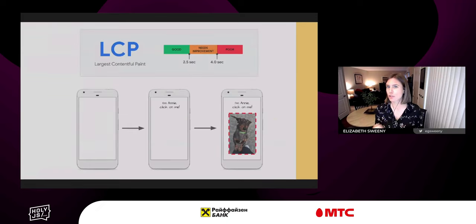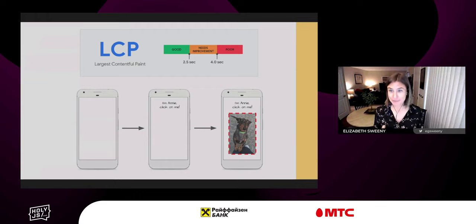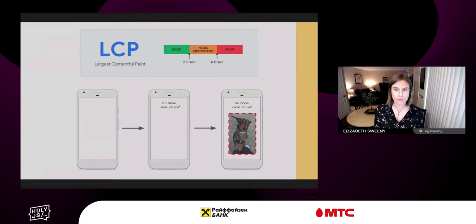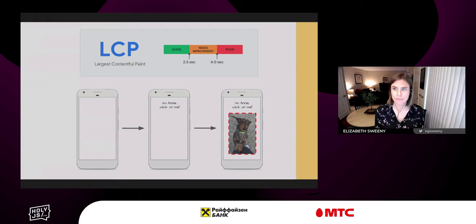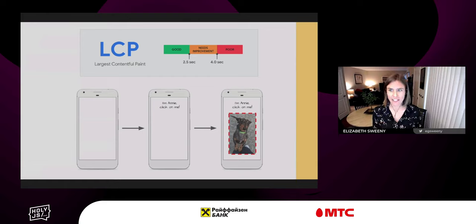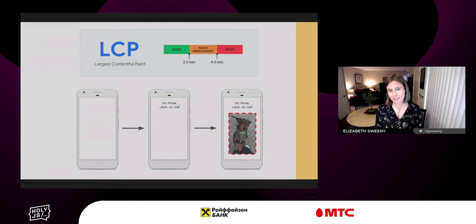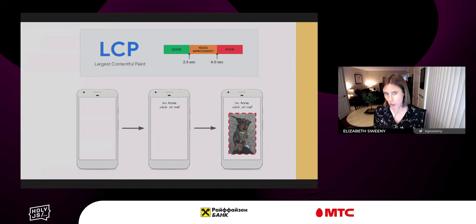Largest contentful paint is a measurement of perceived loading experience. It marks the point during page load when the primary or largest content element has loaded and is visible to a user within the viewport. LCP is an important complement to first contentful paint (FCP), which only captures the very beginning of the loading experience. To provide a good user experience, we should strive to have an LCP within the first 2.5 seconds of the page starting to load, measured at the 75th percentile of page loads across both mobile and desktop devices.